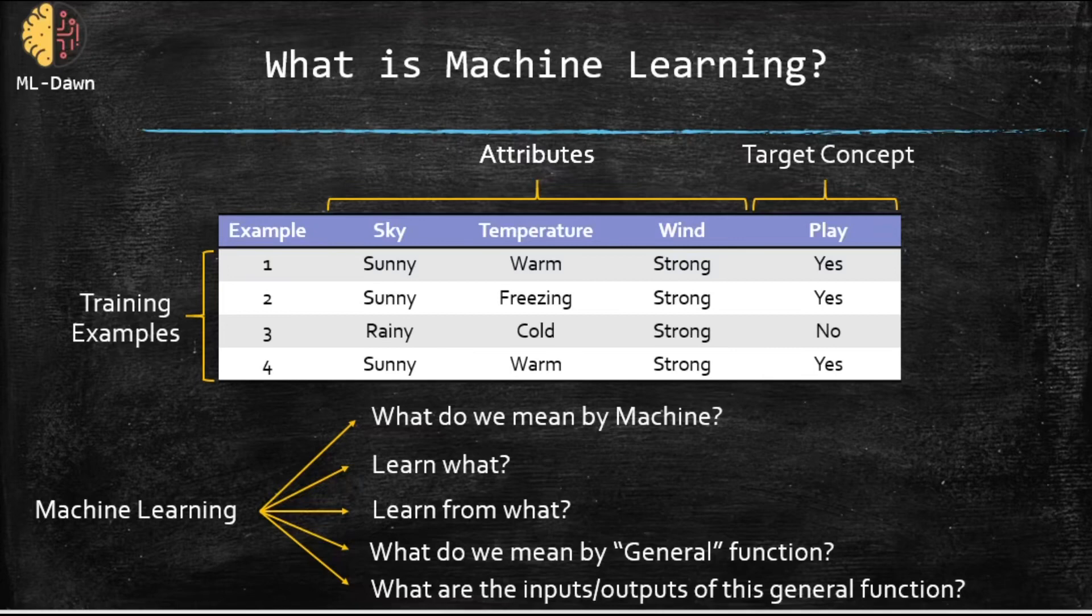Learn from what? From our training examples of which we have four here. For example, the first training example is sunny, warm, strong. That are the values for sky, temperature, wind. And the corresponding outcome for that is yes. So this is given to the machine.